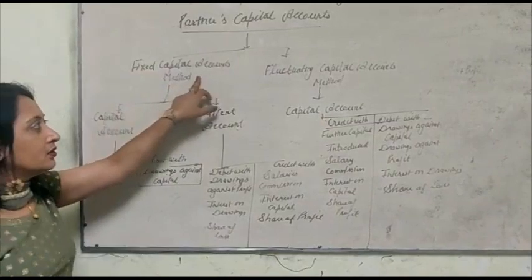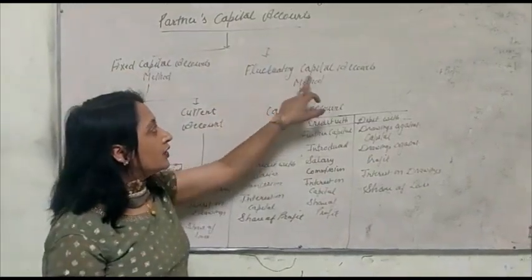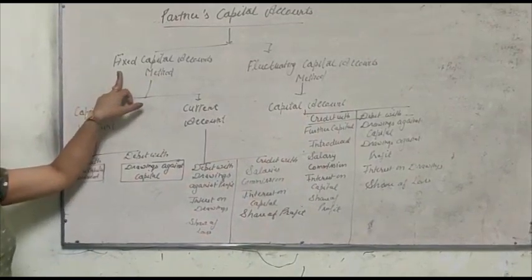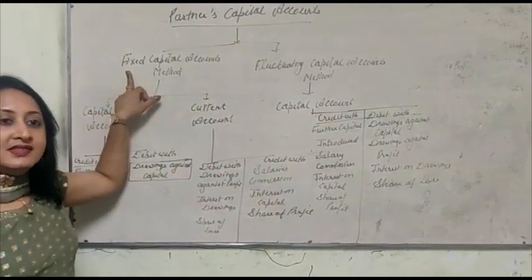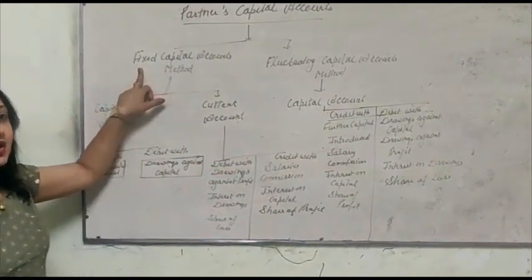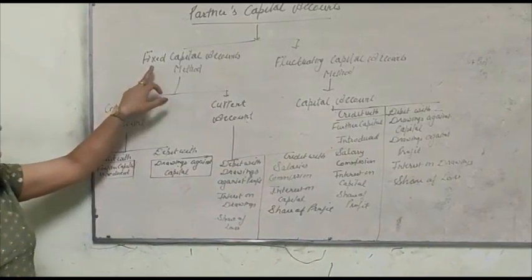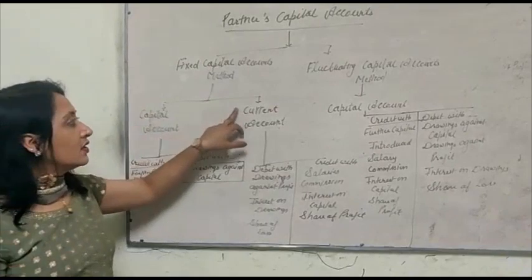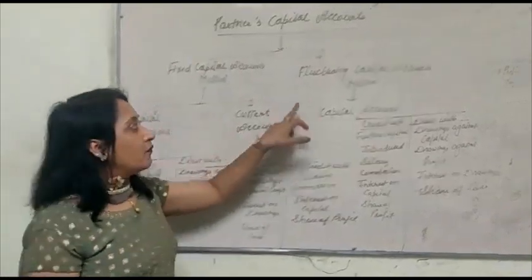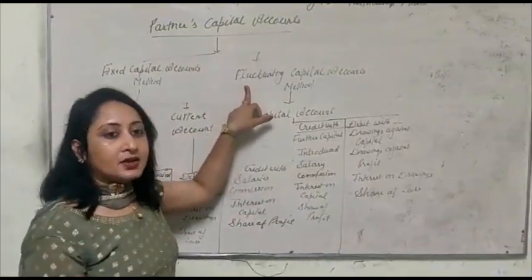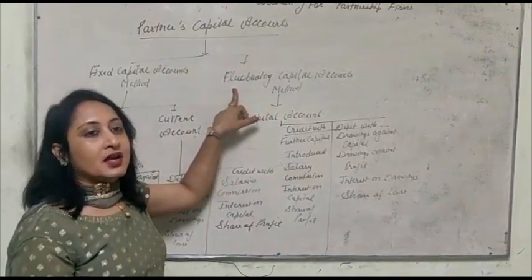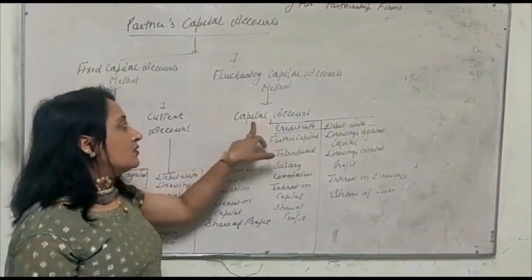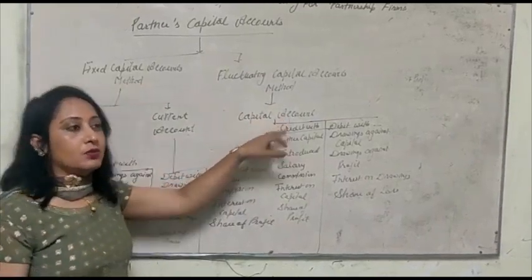The first type is the fixed capital account, where the capital of the partner remains the same or unchanged. Under fixed capital, two accounts are prepared: capital account and current account. The second type is the fluctuating capital account, where the capital changes from time to time. Under fluctuating capital, only a single account is prepared, called the capital account.